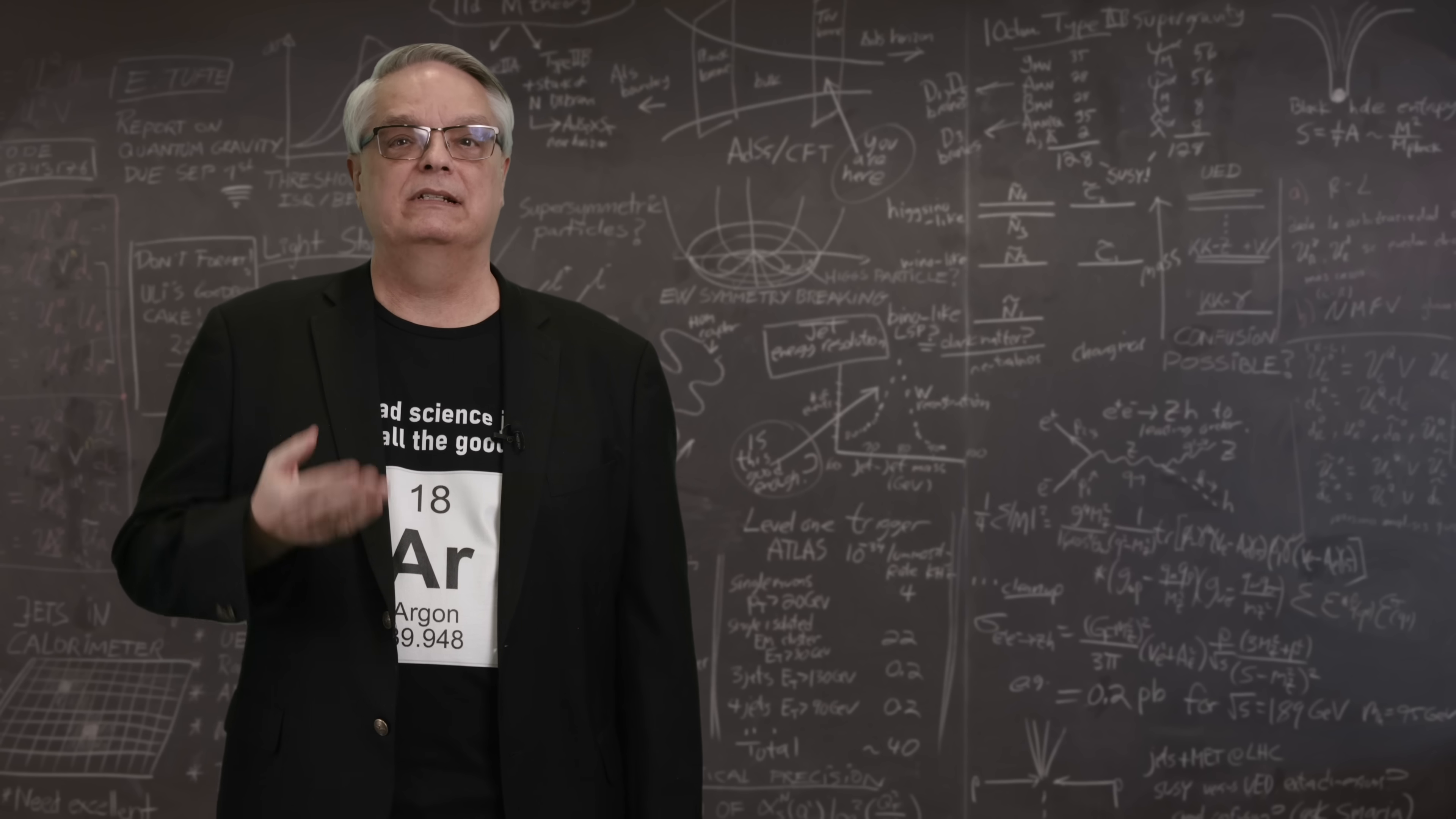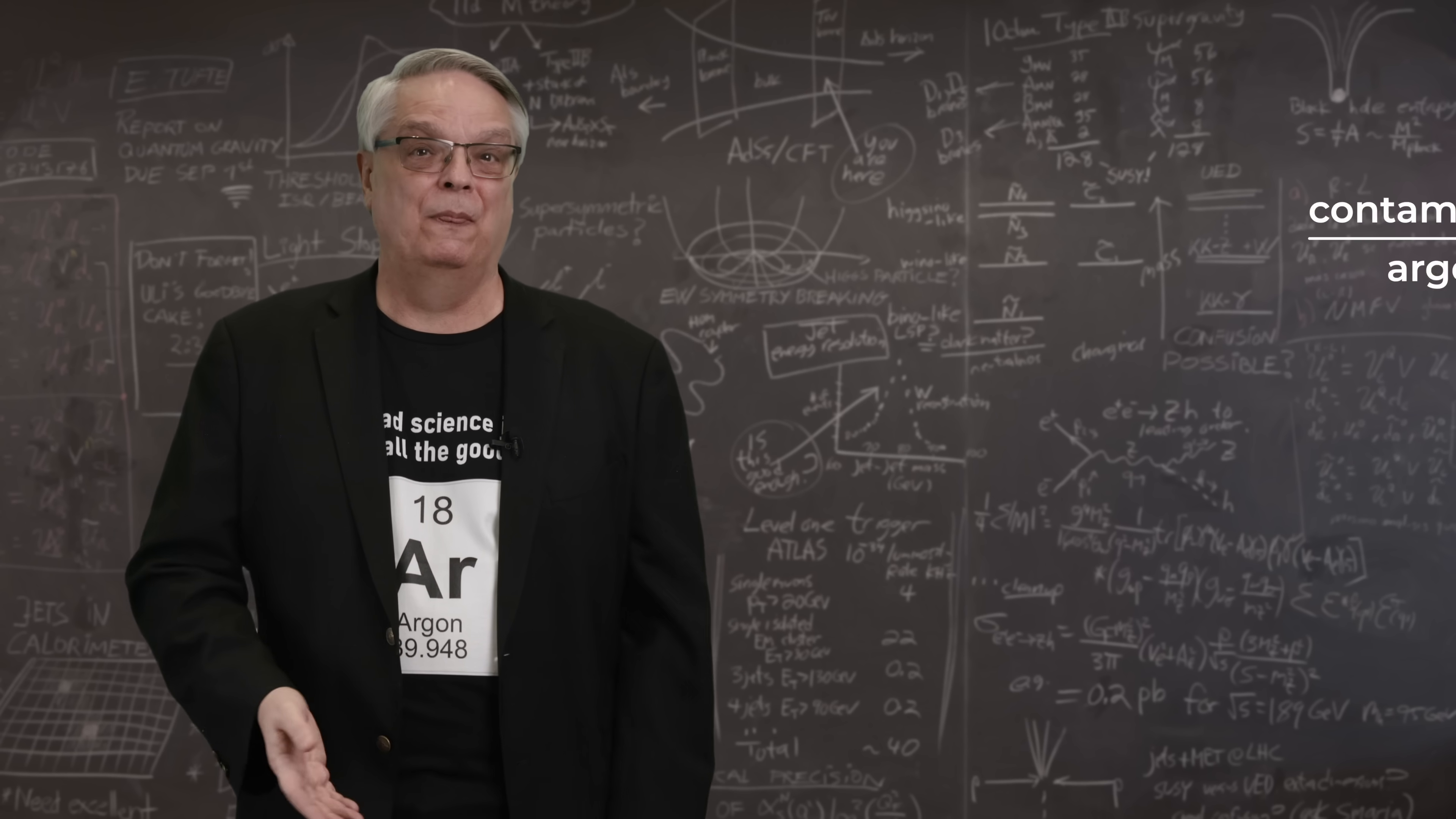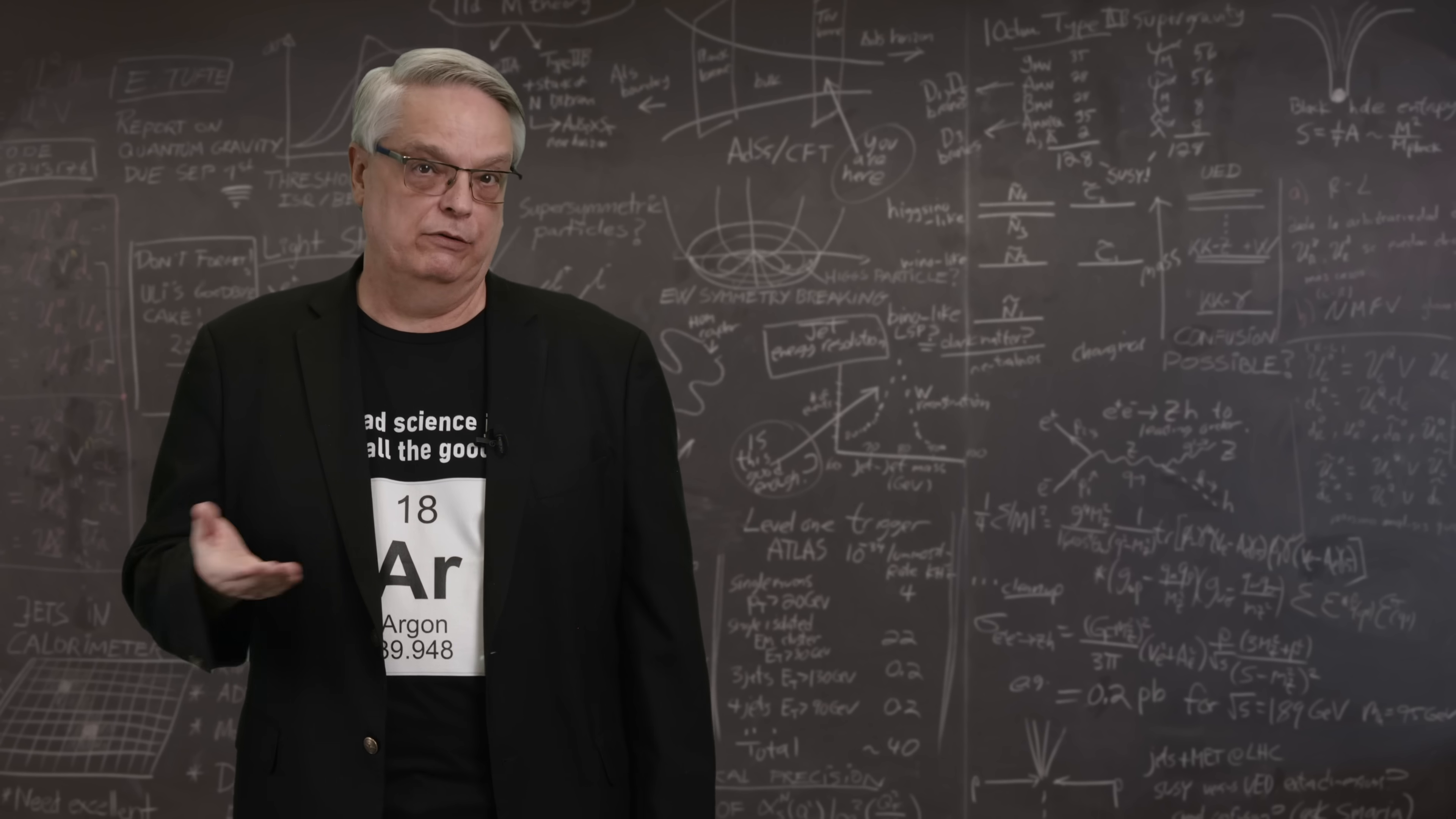If you built a detector using commercially available liquid argon, the electrons could only travel something like 2 millimeters. And remember, the neutrino scientist needs something more like several meters. In order to build a working detector, scientists need liquid argon with a purity of more like 10 parts per trillion, or at least several thousand times purer than you can buy.